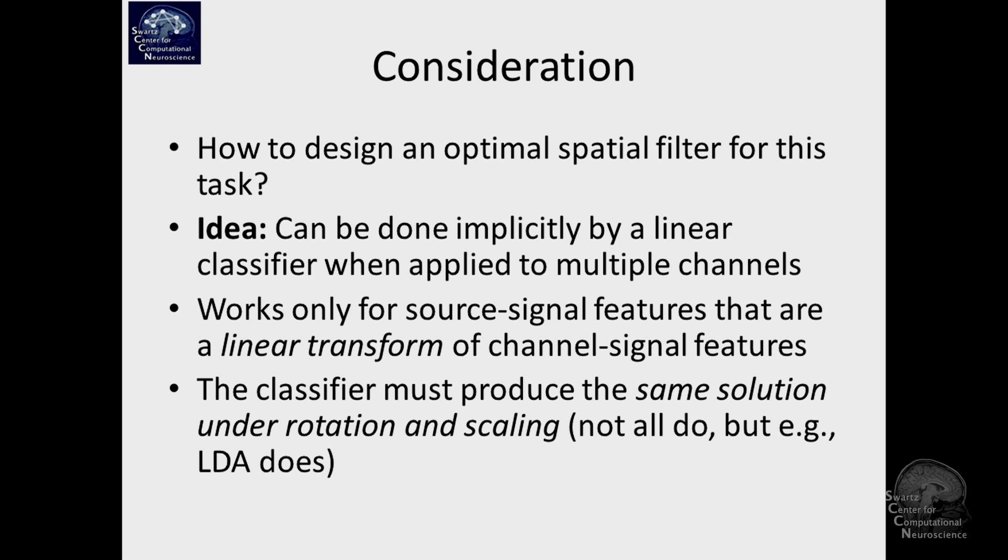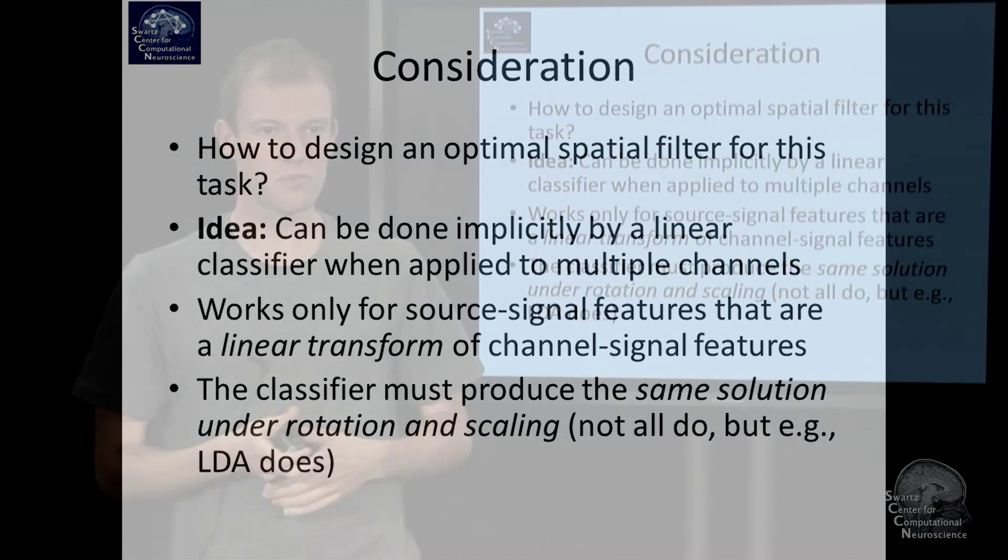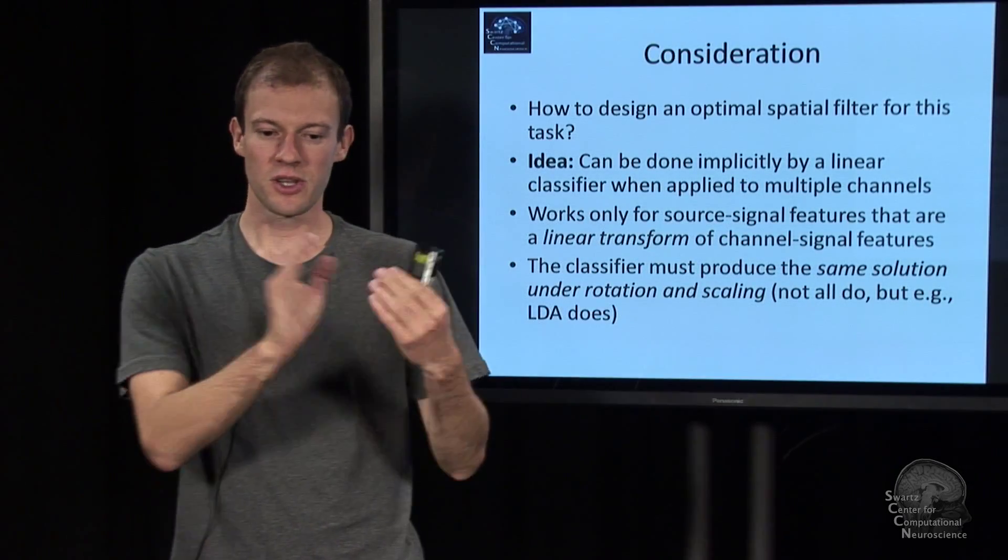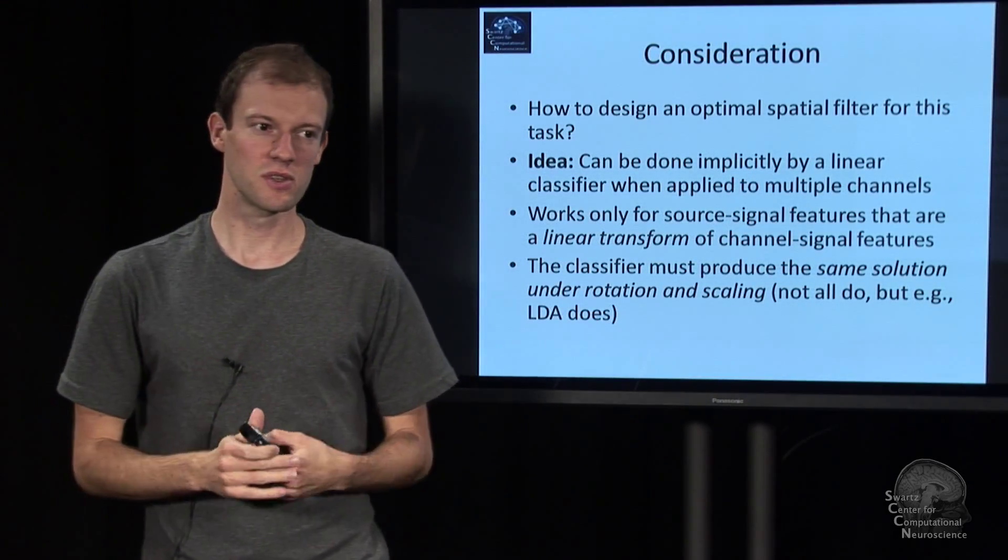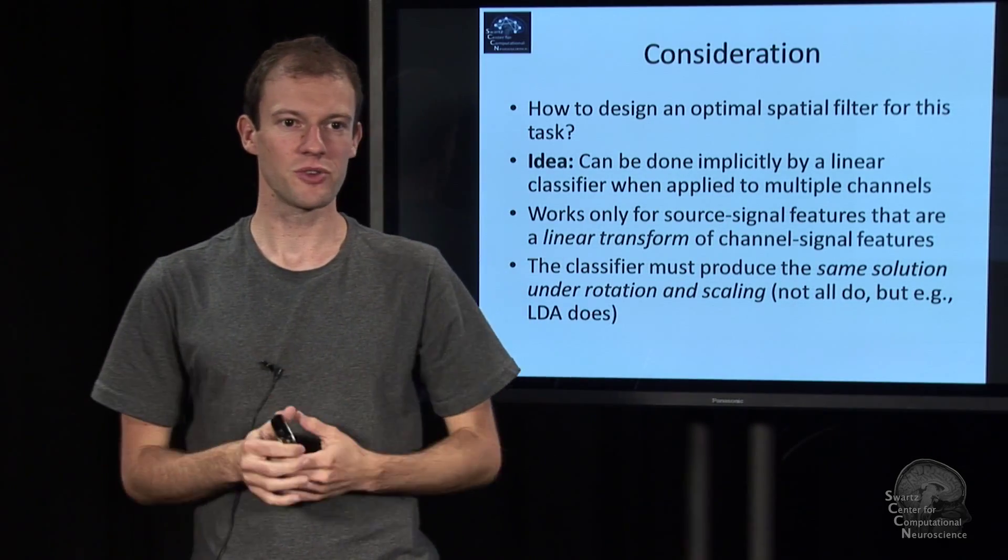And it's not a linear transform of the channel features. But if you're taking something like averages of the source time course in certain time periods, that's a linear transform of the channel averages. The relationship is a spatial filter. And the other part is on the classifier.